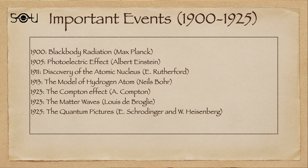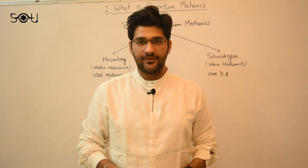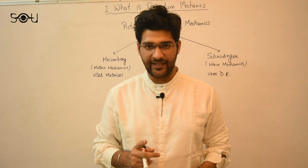I have prepared a small slide showing some major events in the first quarter of the 20th century that led to the development of quantum mechanics. In 1900, Max Planck explained the black body spectrum — this is where quantum mechanics formally began. Five years later, Albert Einstein used Planck's constant to explain the photoelectric effect. In 1911, Rutherford discovered the nucleus. Two years later in 1913, Bohr gave his atomic model. Then in 1923 we had the Compton effect by Arthur Compton, and finally in 1925 Schrödinger and Heisenberg gave their own pictures of quantum mechanics.